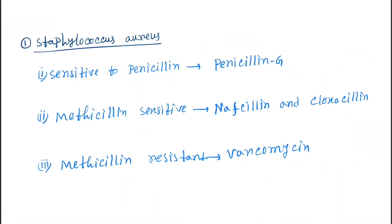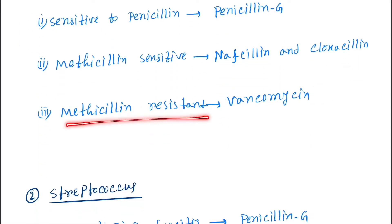First one is Staphylococcus aureus. So if the Staphylococcus aureus species is sensitive to penicillin, then the drug of choice is penicillin G. If methicillin sensitive, then the drug of choice is nafcillin and cloxacillin. If methicillin resistant, the drug of choice is vancomycin. This is very important.